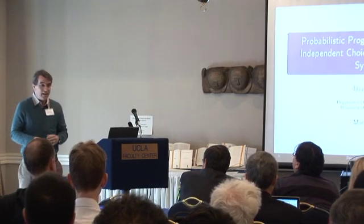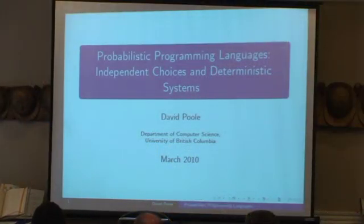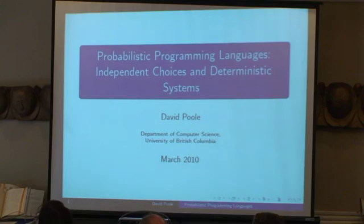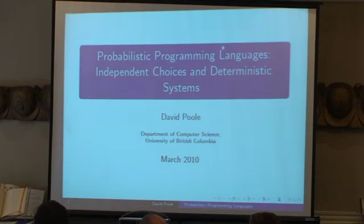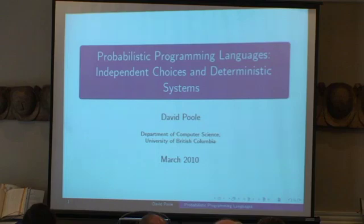Very honored to be able to talk and honor Judea Pearl here. This talk arose from a NIPS workshop on probabilistic programming languages a few years ago, where everyone had reinvented probabilistic programming languages. Everyone was saying 'my language is different to yours because it was represented in C, or based on Scheme, or Java, or logic programming,' but basically everyone was doing the same thing with different programming languages. The idea here was to abstract and talk about how we can discuss this in terms of programming languages.